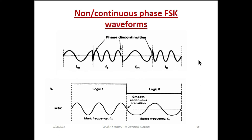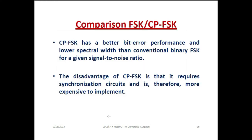In non-continuous phase FSK waveforms, the phase is discontinuous between mark and space. For the mark and space signals: logic 1 is represented by the mark and logic 0 by the space frequency — here minimum frequency corresponds to maximum time, and maximum frequency corresponds to minimum time. In comparison, CPFSK has better error performance and lower spectral width than conventional binary FSK for a given signal-to-noise ratio. The disadvantage of CPFSK is that it requires a synchronization circuit and is therefore more expensive to implement.